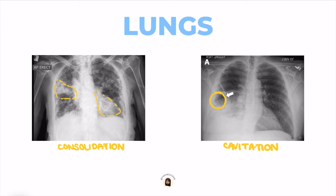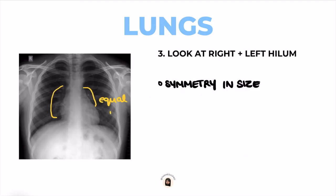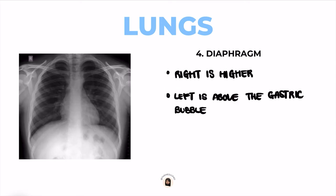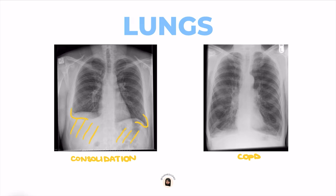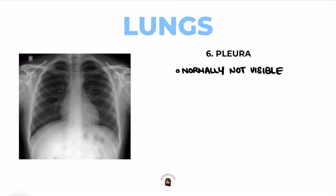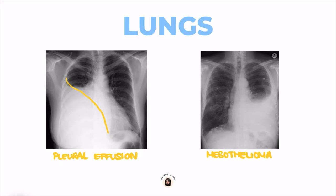Cavitation is the opposite — it's an abnormal space filled with gas within the lung tissue. Third, look at the hilum: check for symmetry and size, as any asymmetry may indicate malignancy. Fourth, check the diaphragm. Normally, the right is higher than the left because of the position of the liver, and note that the left diaphragm is above the gastric bubble. Next, check the costophrenic angles, which are usually sharp, but may be affected in consolidation or hyperinflation in COPD. Lastly, check the pleura — not normally visible in healthy individuals, but in hydrothorax or hemothorax these substances can accumulate causing a pleural effusion. In mesothelioma, thickening of the pleura is usually seen.